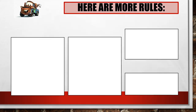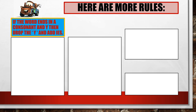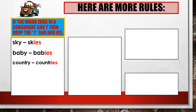Here are more rules. If the word ends in a consonant and Y, then drop the Y and add IES. Here are some examples: one sky, many skies. One baby, many babies. One country, many countries. One party, many parties. One assembly, many assemblies.